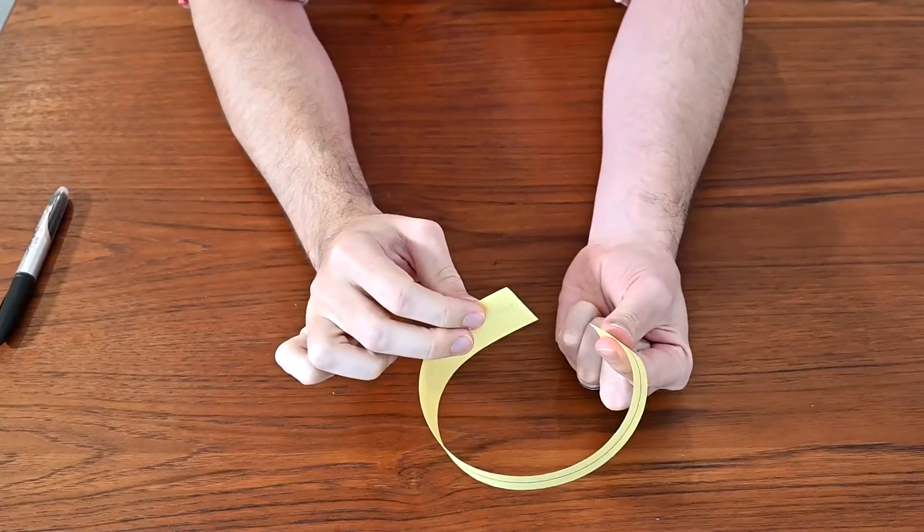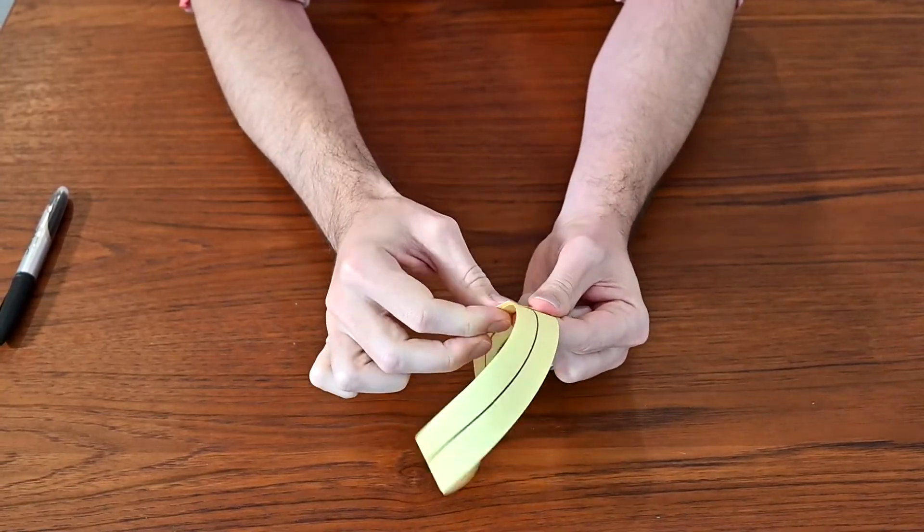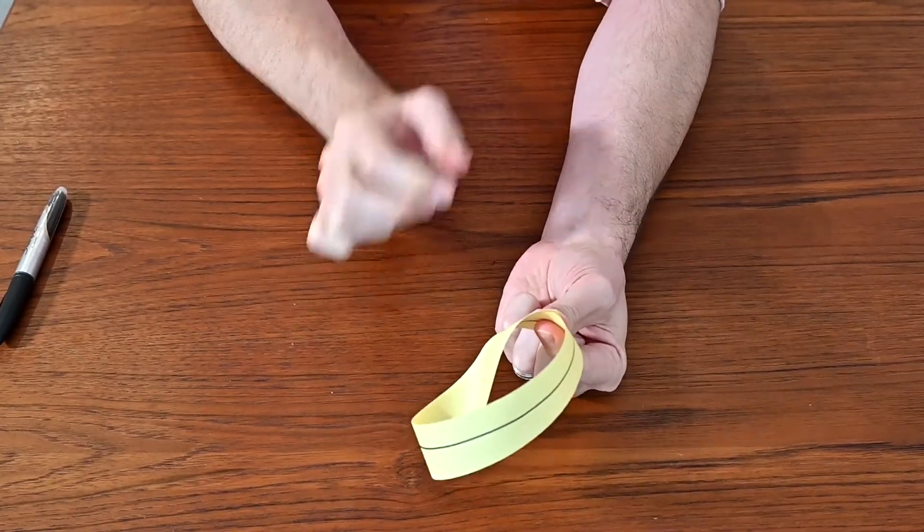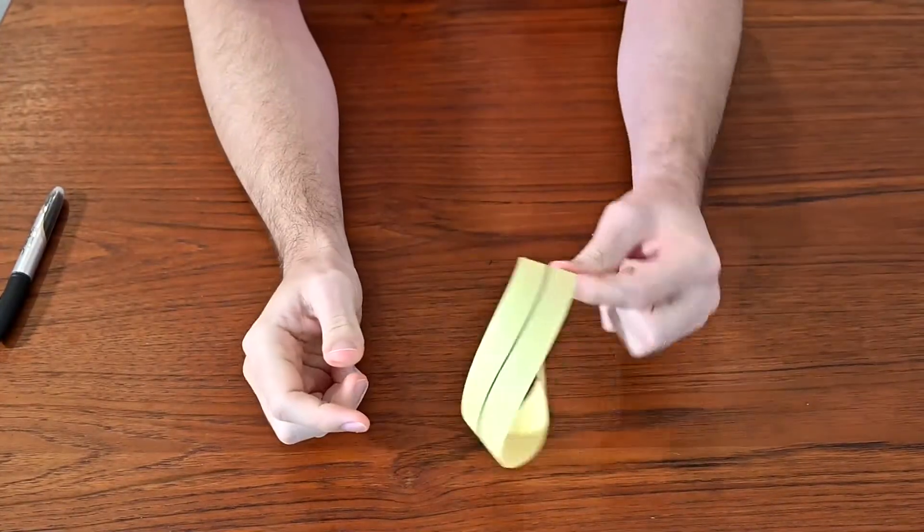But to make a Möbius strip, what I'm going to do is instead twist it once before I attach it. And this creates a Möbius strip. I'll just tape it together at that spot just to keep it nice and secure. This is sort of what it looks like.